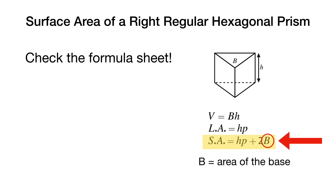The thing we're interested in first is finding that uppercase B, which is the area of the base. If you're wondering what this formula SA equals HP plus 2 uppercase B is, there is another video I'll link in the description for you to check out. But for now, we're just going to use it.